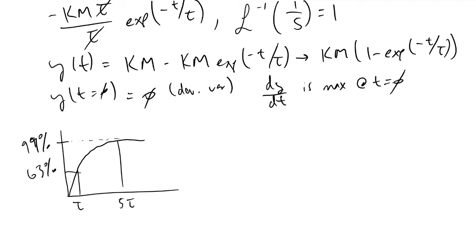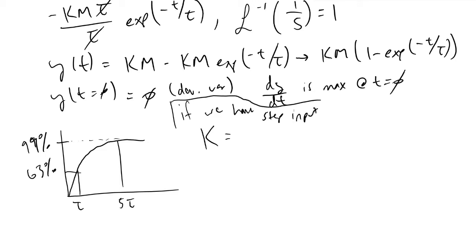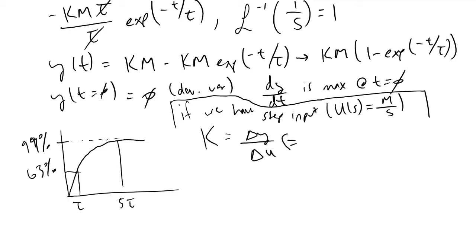Another important parameter is the system gain k. For a step input U(s) = m/s, the gain is defined as the change in output divided by the change in input u, and it carries units of output over input. A key takeaway is that gain accounts for both the output and the input — it does not refer only to the output, which is a common mistake.